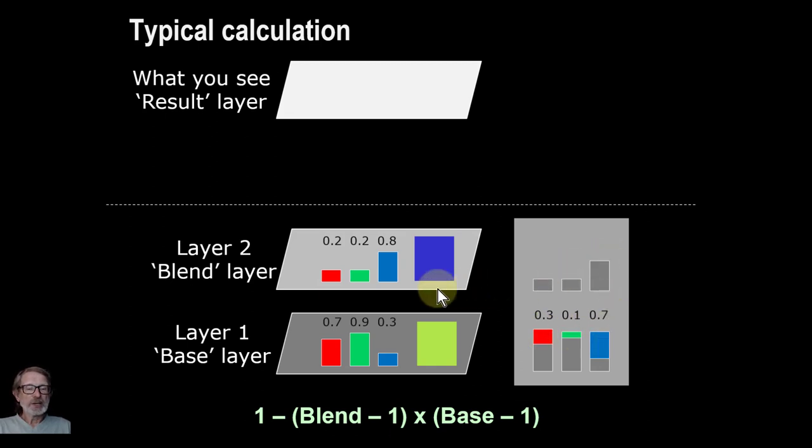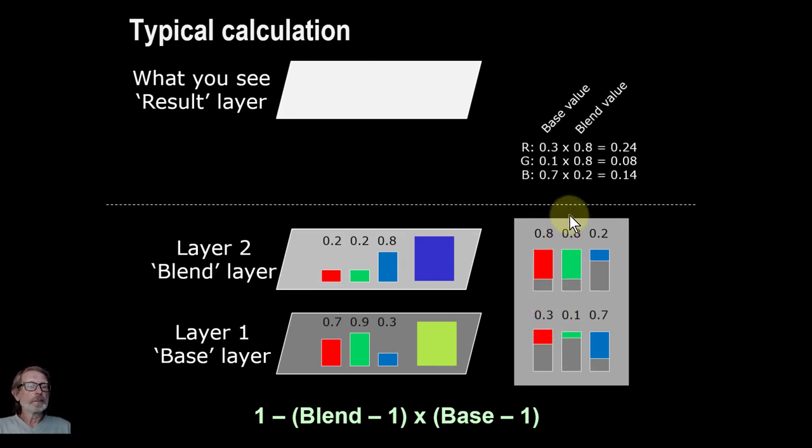And take these three here in the blend layer, the invert is 0.8, 0.8 and 0.2. So we need to multiply these together now, so 0.3 times 0.8. So there we get 0.3 times 0.8 is 0.24, and so on like that, which is going to give you 0.3 times 0.8, 0.24 is here, and so on. So you get these quite small numbers here.